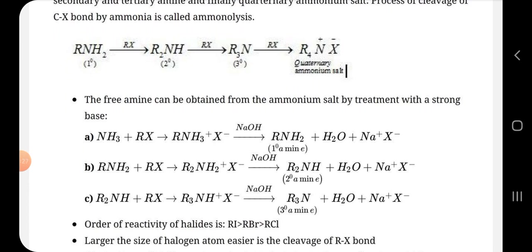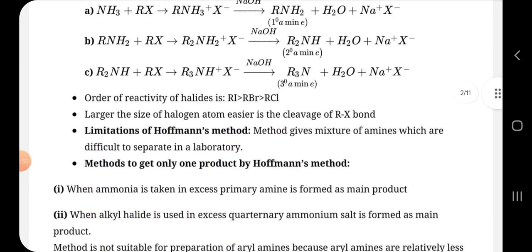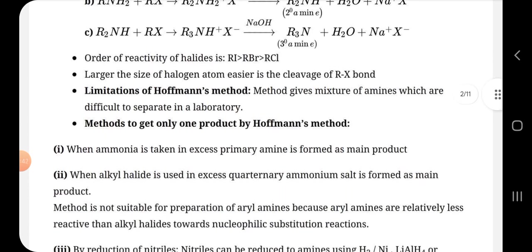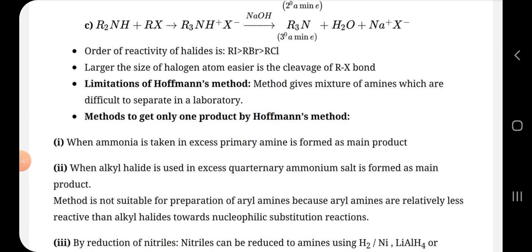The order of reactivity of halides is RI greater than RBr greater than RCl. Larger the size of halogen atom, easier is the cleavage of R-X bond. The limitation of this method is that this method gives mixture of amines which are difficult to separate in lab.